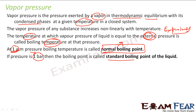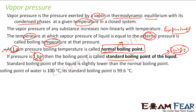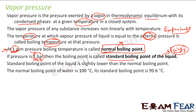One bar is a more scientifically accepted value. The standard boiling point is slightly lower than the normal boiling point because one bar is slightly greater than one atmosphere. So for water, the standard boiling point is 99.6 degrees Celsius, while the normal boiling point is 100 degrees Celsius.